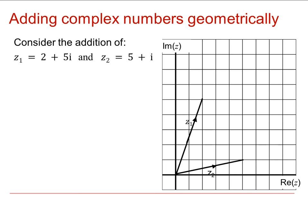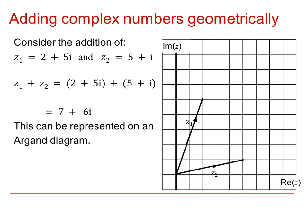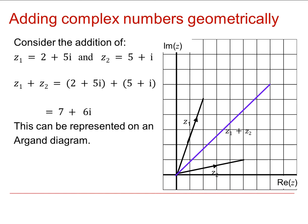Now when we add these together, this is a straightforward addition, as you well know, we get the number 7 plus 6i. How can we represent that on the Argan Diagram? Well, if we think where 7 plus 6i is, that's the result that we want.